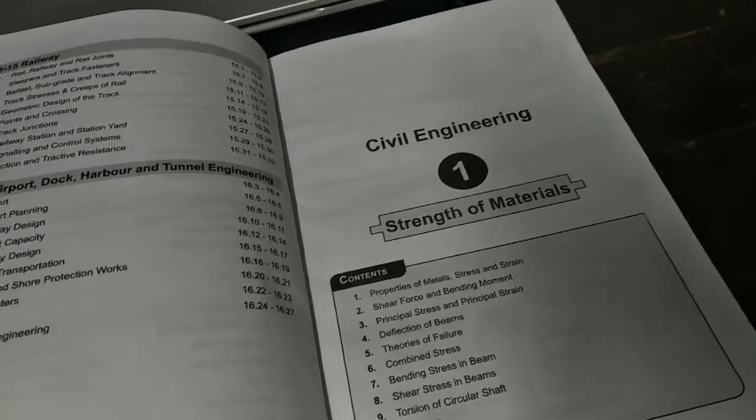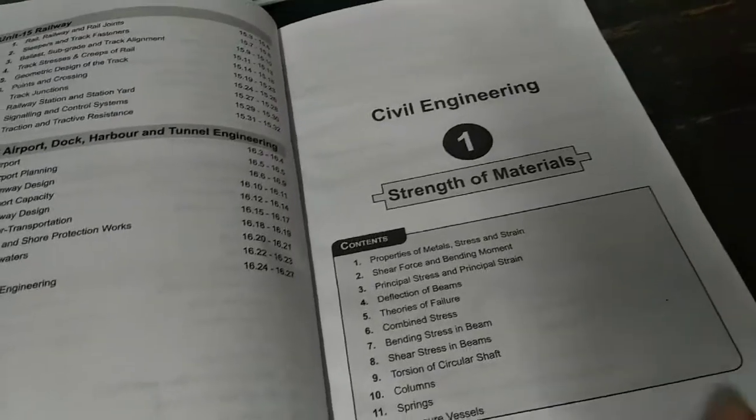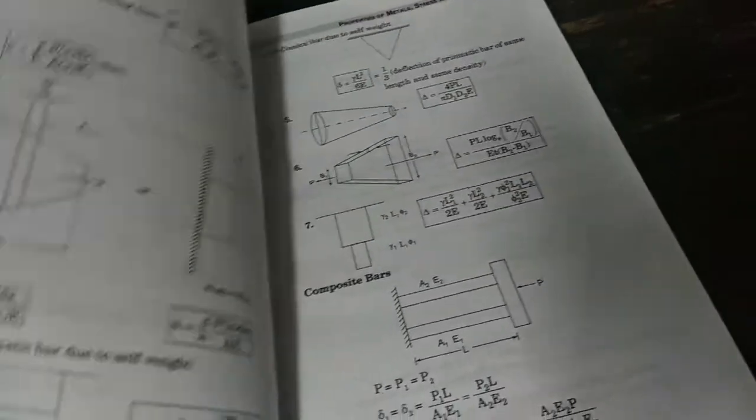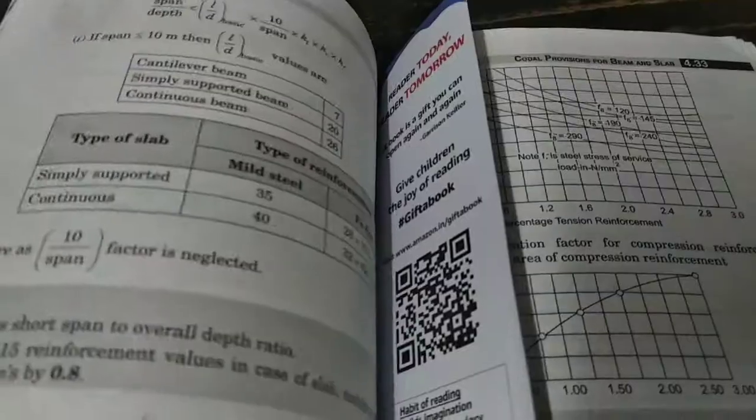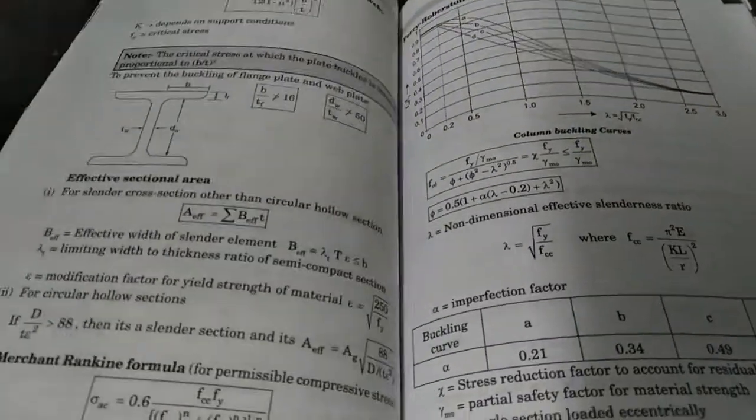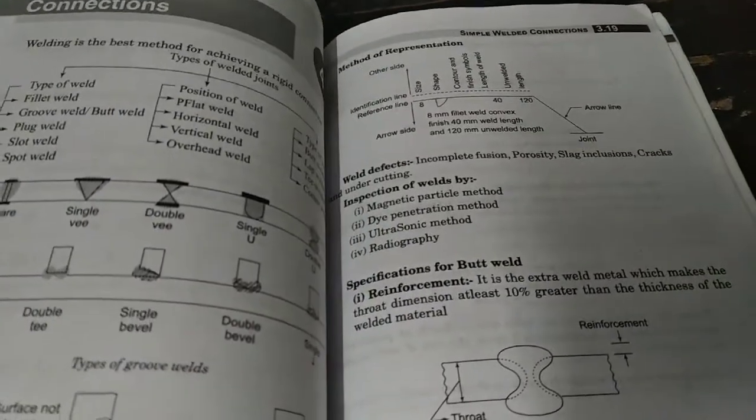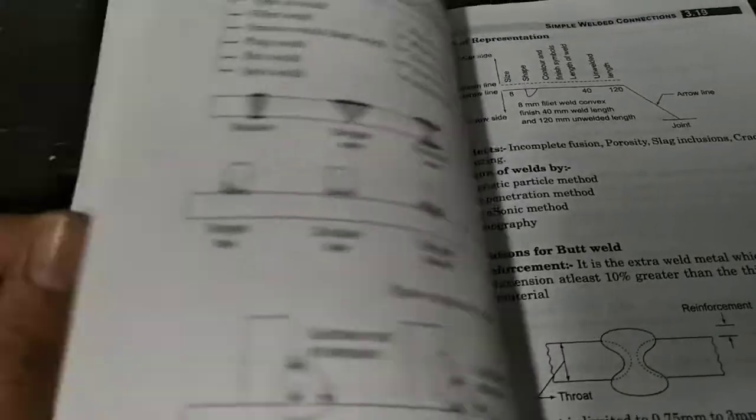I am showing you - coming to RCC, it has all these charts and formulas with figures. They have given the explanation. This is steel structures - all types of steel structures, all types of welds. They have given the formulas.